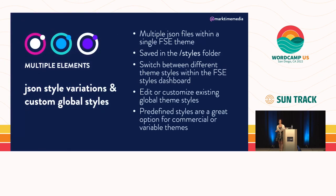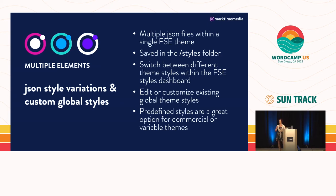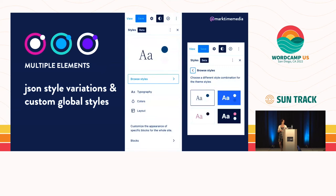One cool thing, especially if you're doing commercial or variable themes, is being able to include multiple variations of JSON styles within your theme, so your end user can switch between different styles without switching themes. In your site editor, there's a style section where the end user can completely change what their theme looks like — that's something you as a theme person can include.